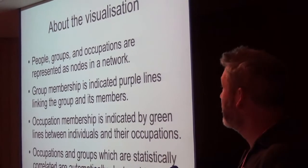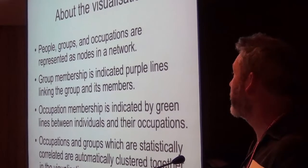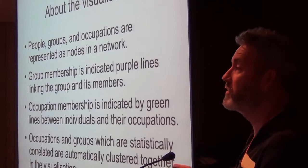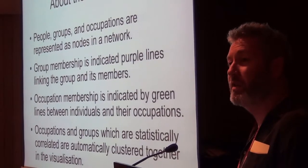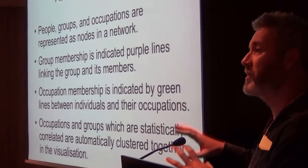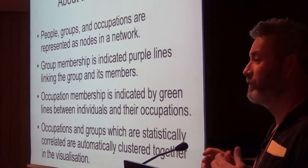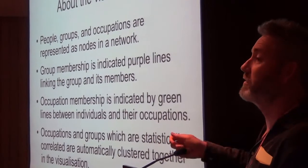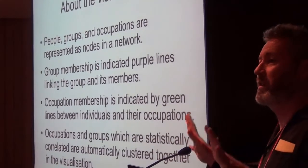Group membership is indicated by purple lines linking a group to its members. Occupation membership is shown by green lines between individuals and their occupations. The interesting thing about the visualization is the way those relationships end up producing a graph in which related occupations end up situated approximately near each other. Occupations and groups move around to minimize the overall tension of the graph — all the little nodes are repelling each other as if statically charged, while the relationships between nodes act like stretchy rubber bands, producing the graph you'll see.